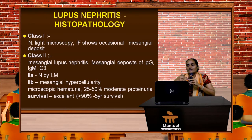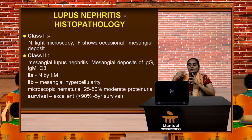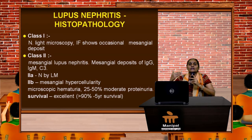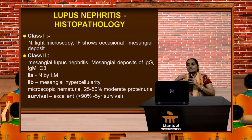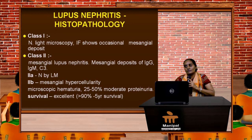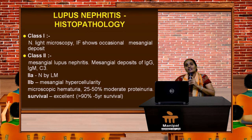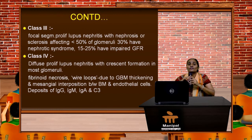Lupus nephritis is classified based on renal biopsy histopathology. Class 1 has normal light microscopy with immunofluorescence showing only mesangial deposits. Class 2 is mesangial lupus nephritis with multiple deposits of immunoglobulins and complements including C3; Class 2a is normal by light microscopy, while Class 2b shows mesangial hypercellularity. These result in microscopic hematuria and 25–50% moderate proteinuria. Survival at these stages is excellent — more than 90% five-year survival.